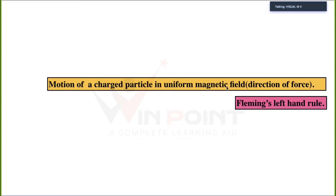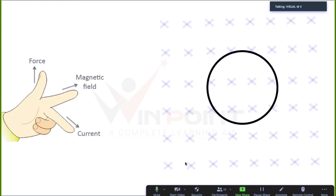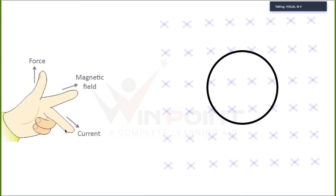Motion of a charged particle in a uniform magnetic field — direction of force using Fleming's left-hand rule. If the forefinger indicates the direction of the magnetic field and the middle finger indicates the direction of current, then the thumb will indicate the direction of force.